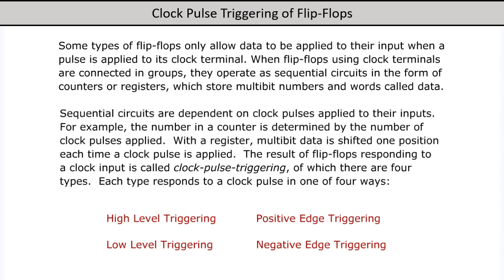Sequential circuits are dependent on clock pulses applied to their inputs. For example, the number in a counter is determined by the number of clock pulses applied.